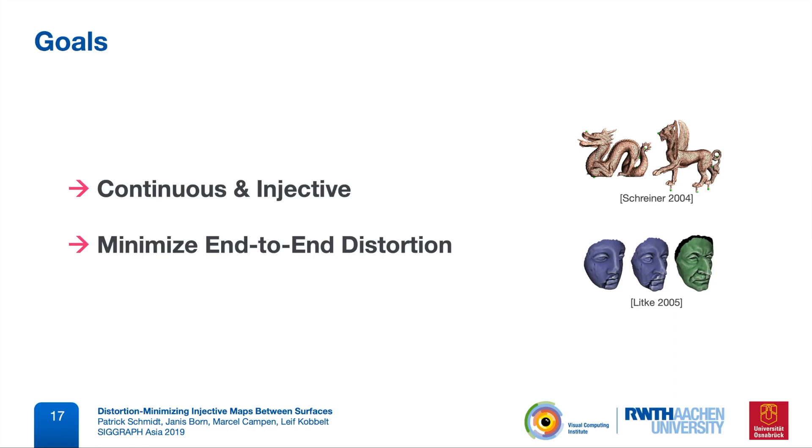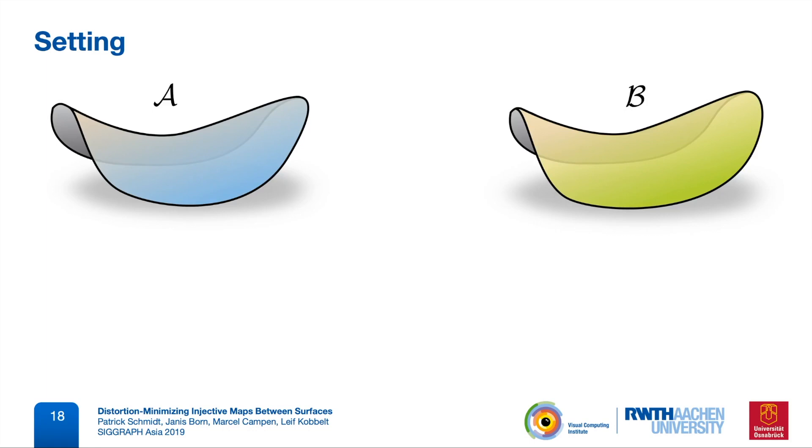We provide a method for this problem in the special case of disk topology surfaces. So as an input, our method takes two such surfaces, and two initial parameterizations into the plane, both of them globally injective.